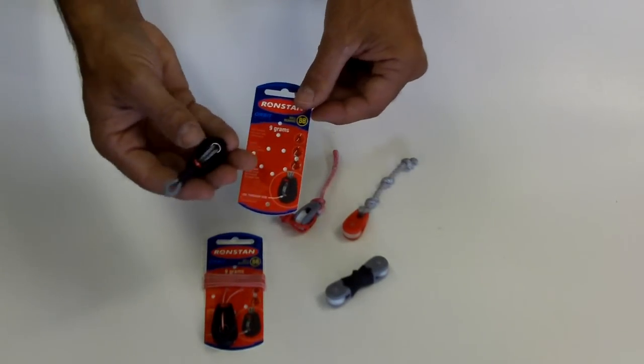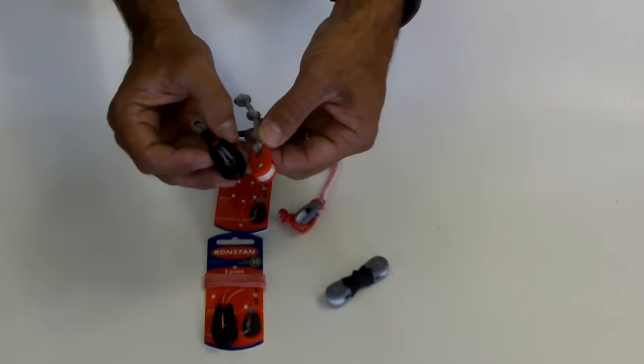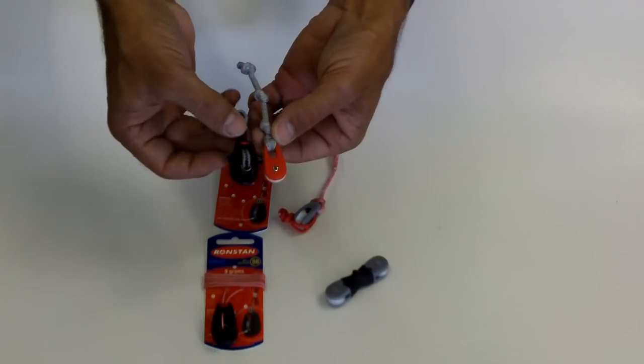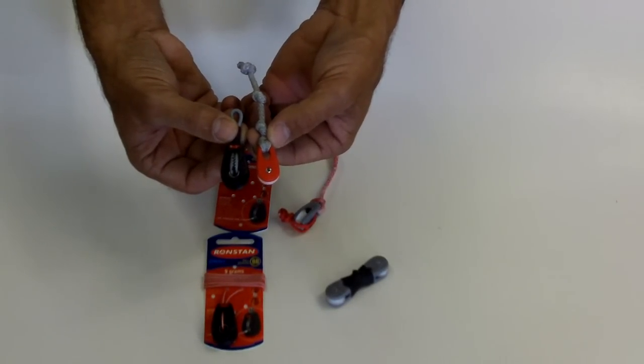That's the new Ronstan Orbit Block Kite Pulley. And you can tell the size reference. They're very close in size. Here at FixMyKite.com and Kiteboarding.com.